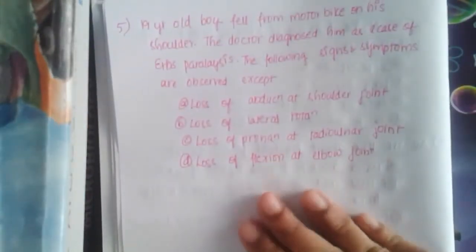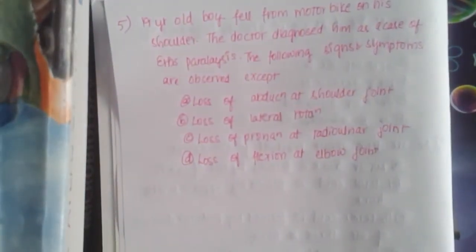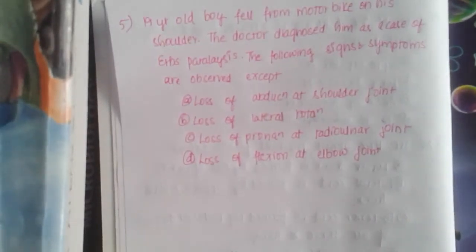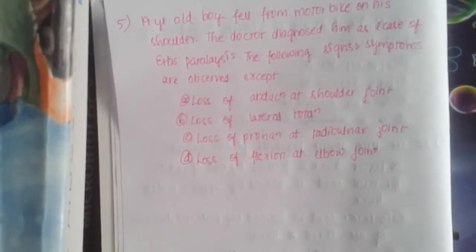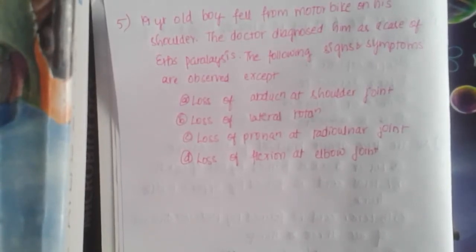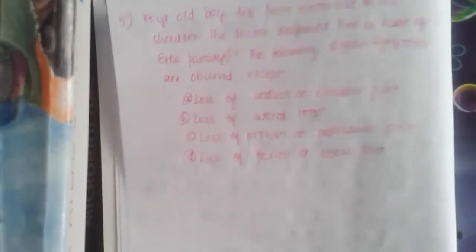The fifth question is: a 19-year-old boy fell from a motorbike on his shoulder. The doctor diagnosed him as a case of Erb's palsy. The following signs and symptoms are observed except: (a) loss of abduction at shoulder joint, (b) loss of lateral rotation, (c) loss of pronation of radio-ulnar joint, (d) loss of flexion at elbow joint.